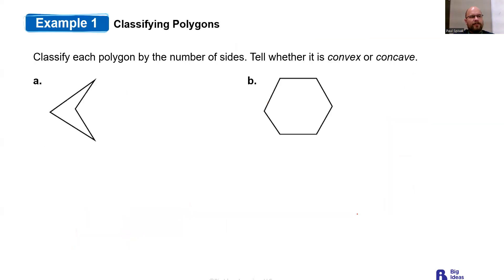Now classify each polygon by the number of sides and tell whether it is concave or convex. On the first one you have four sides, so it is a quadrilateral.